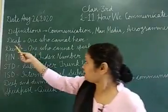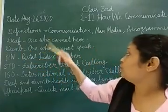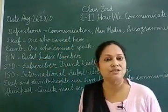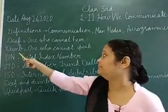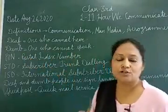Next — deaf means one who cannot hear, and dumb means one who cannot speak. Deaf and dumb people use special ways to communicate.